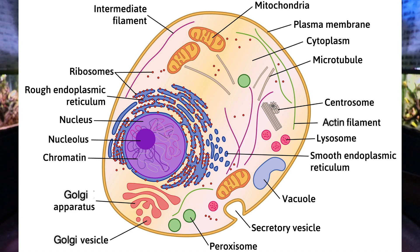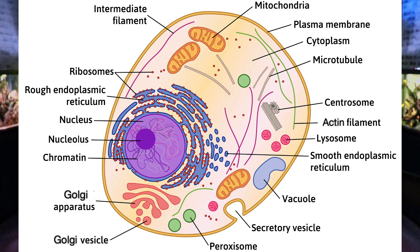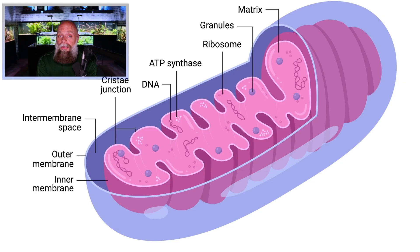Inside eukaryotic cells there is also a cytoskeleton with three main components: microtubules, intermediate filaments, and actin filaments. As we move outside the cell, all cells have a cell membrane separating the inside from the outside. For eukaryotic cells, some have cell walls — plant cells do, but animal cells do not. On the outside of the cell, there can also be flagella for movement.